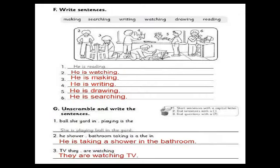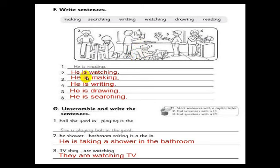This was the homework for yesterday. As you can see, page 60. Now let's answer this page together — exercise F: write sentences. We have some numbers and you have to write a sentence for each one using the words in the box: making, searching, writing, watching, drawing, reading. Number one is done as an example: he's reading. Number two: he's watching.